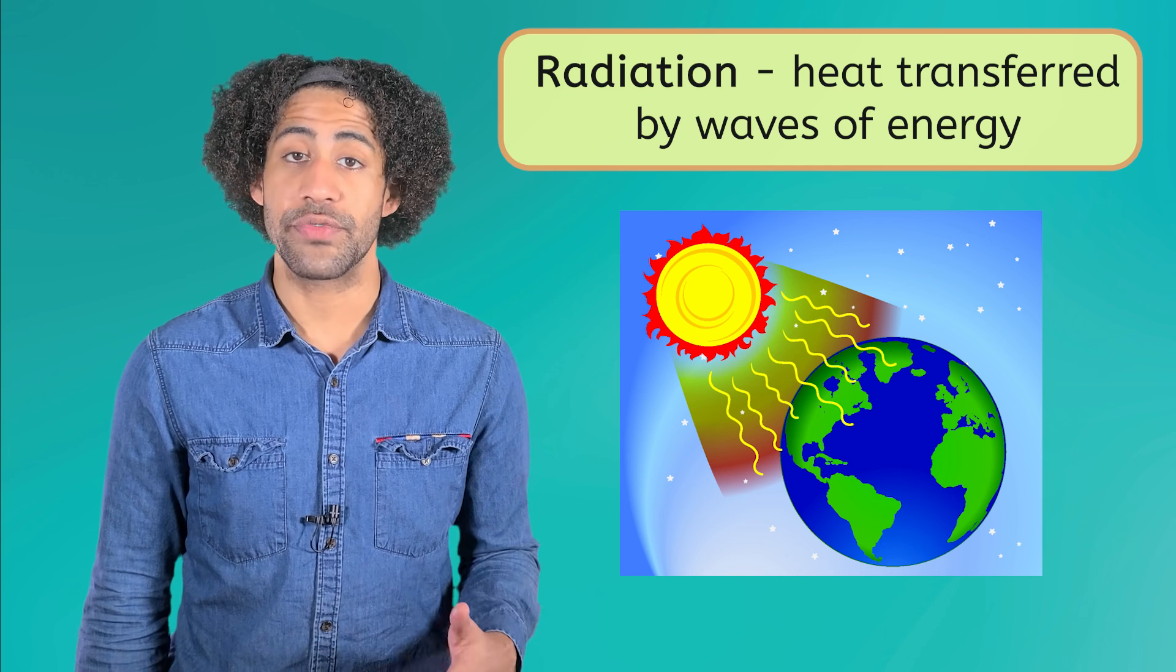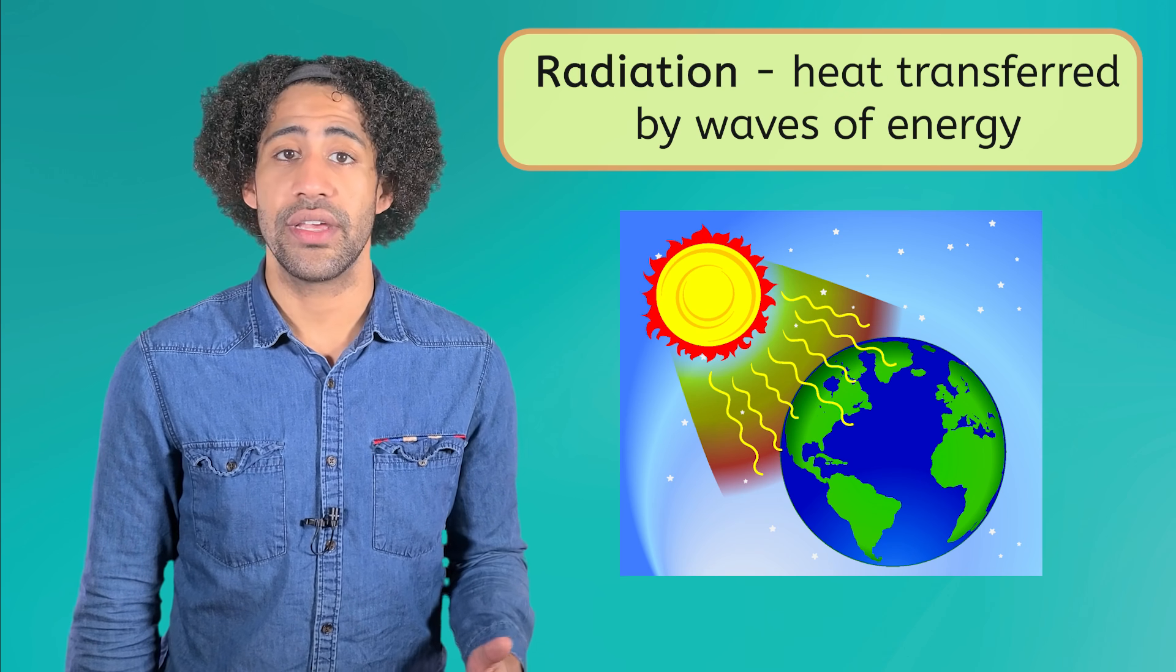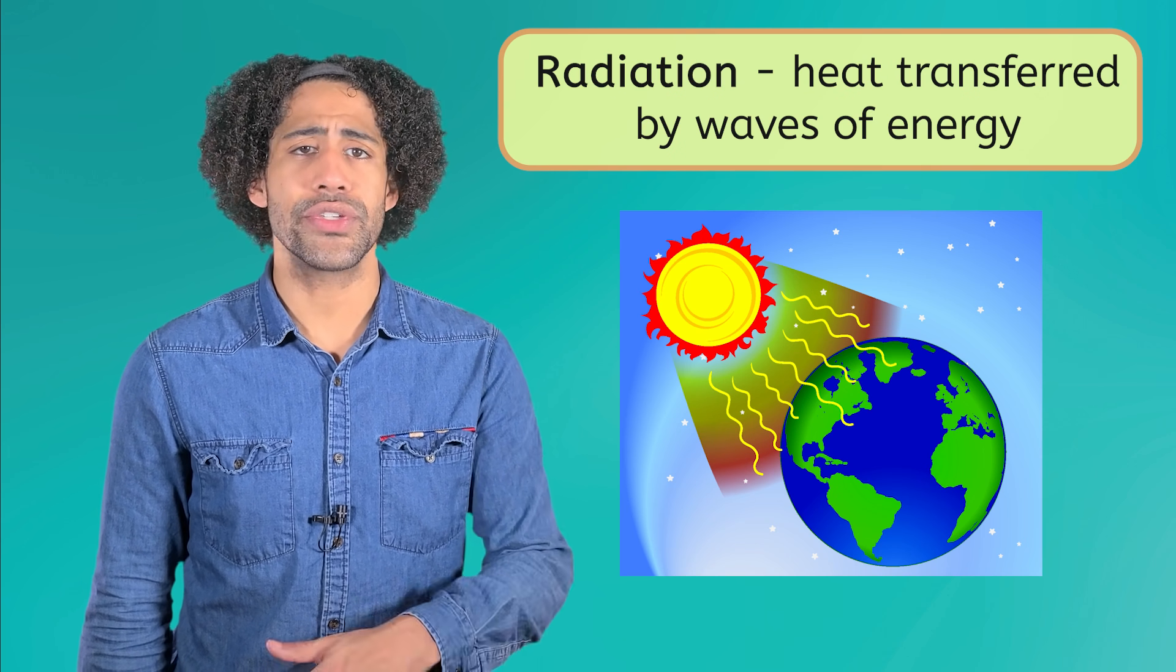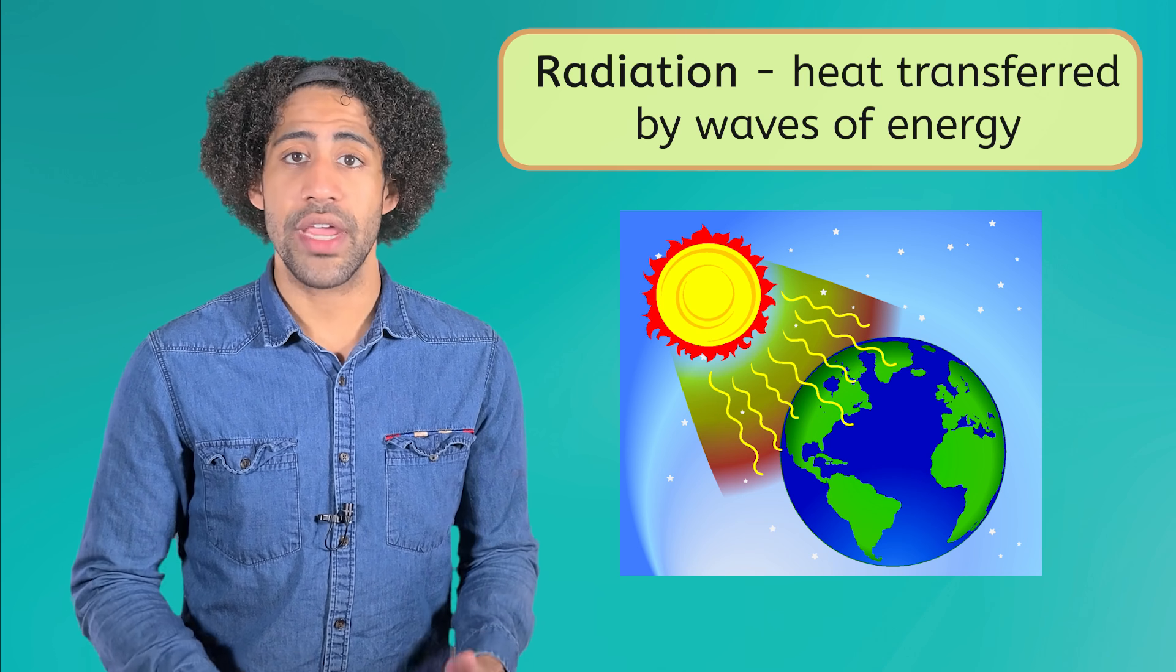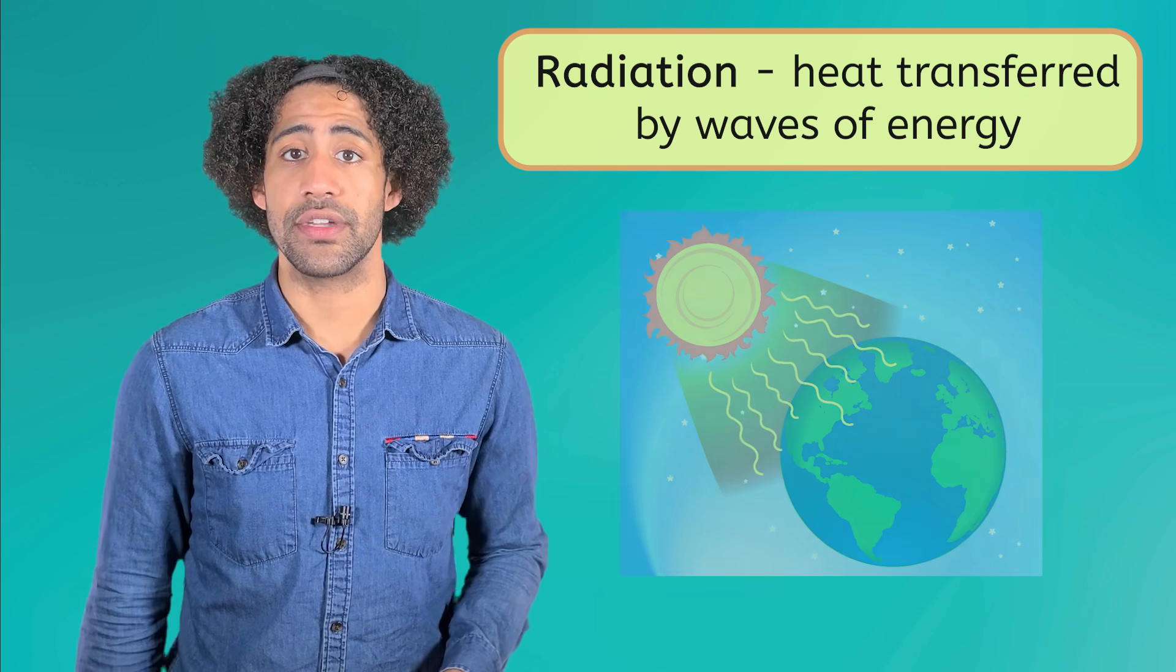The heat energy on Earth comes from the Sun. It warms our atmosphere through a process called radiation. This is when heat is transferred by waves of energy. Radiation from the Sun reaches all the way to Earth's surface, warms up the ground, and introduces heat to the Earth's system.